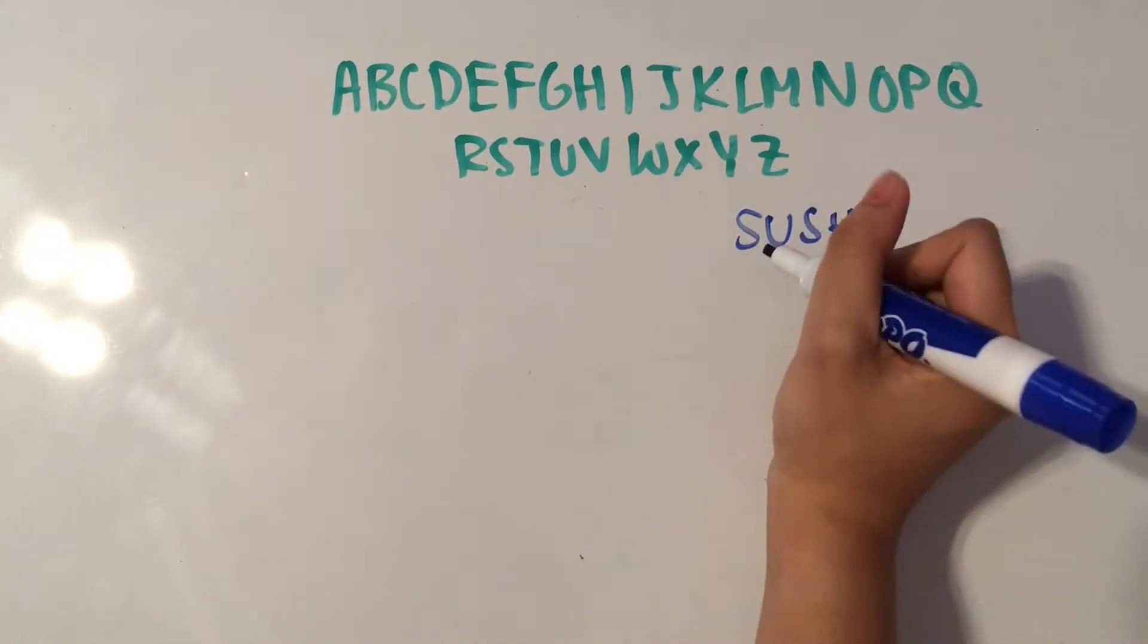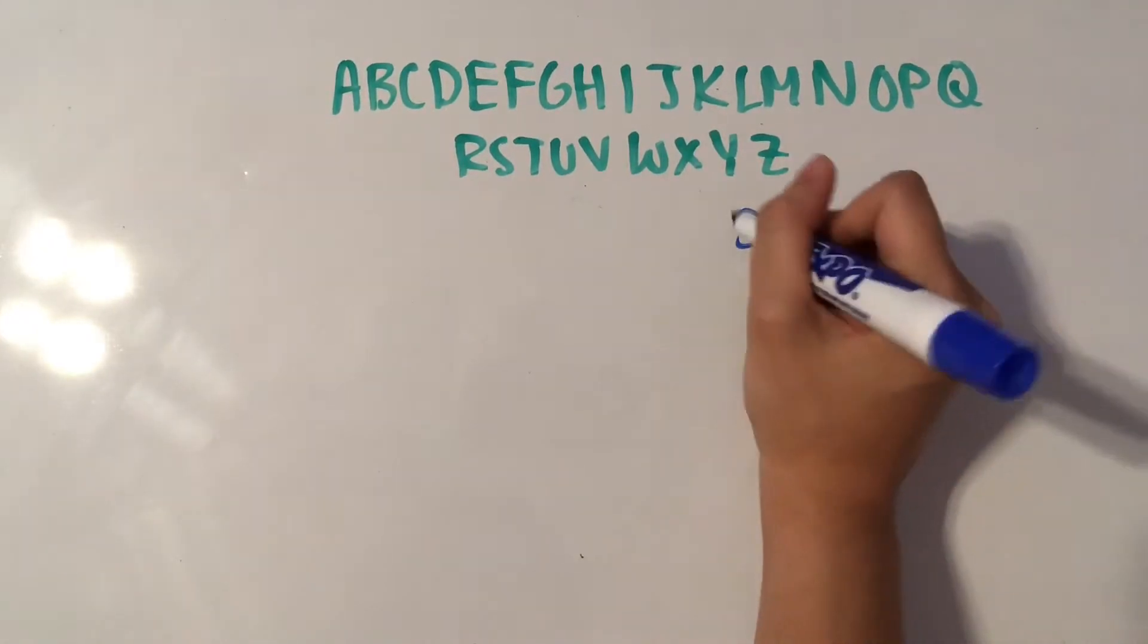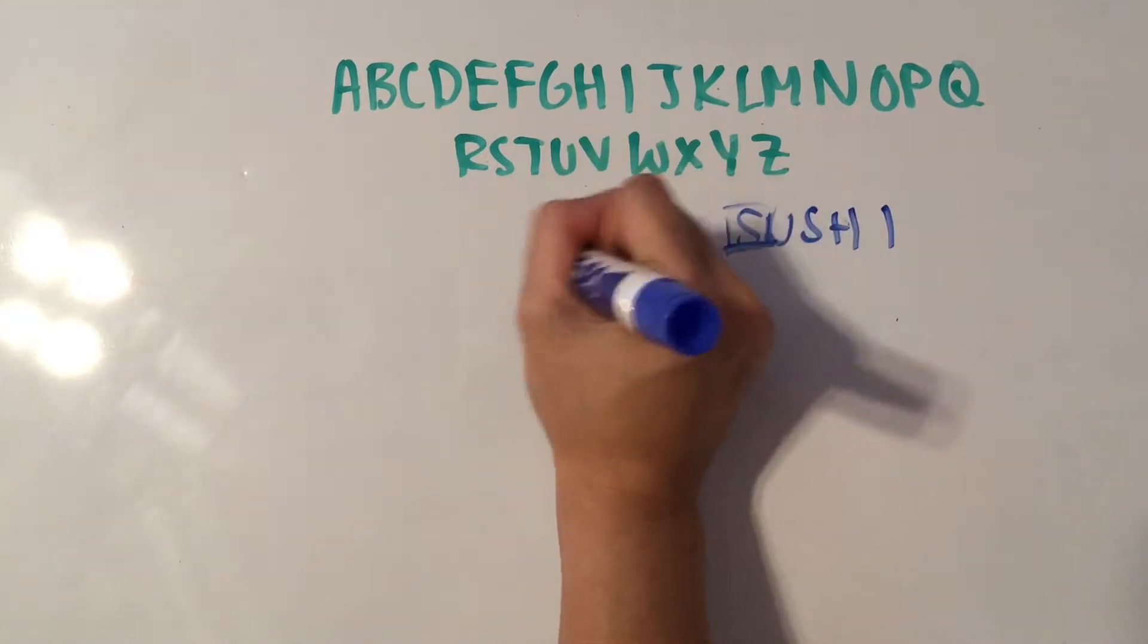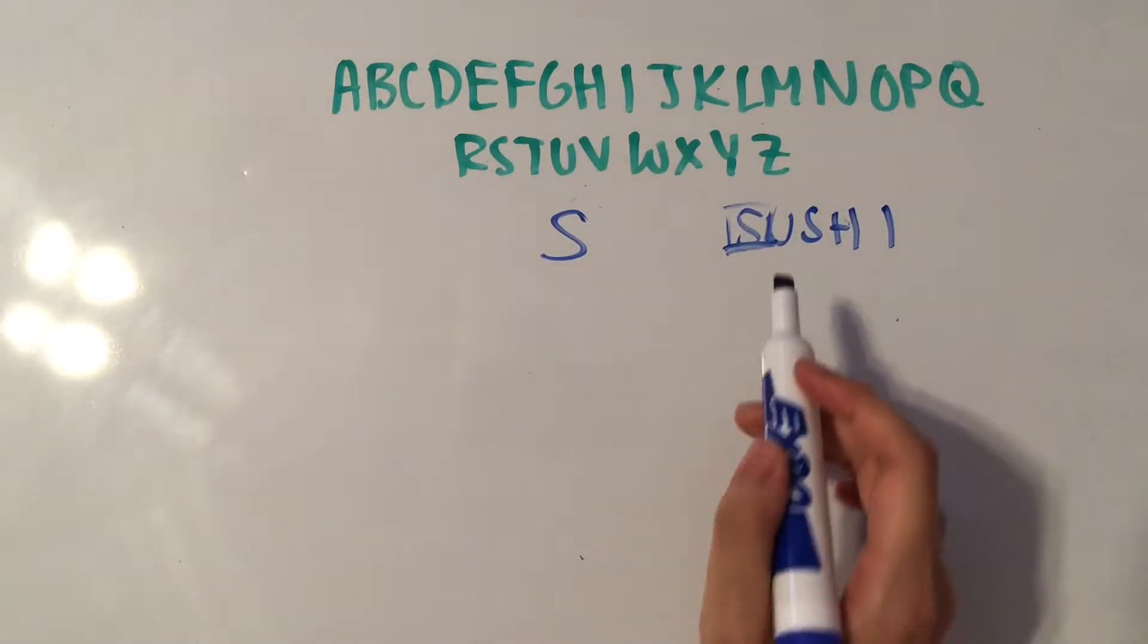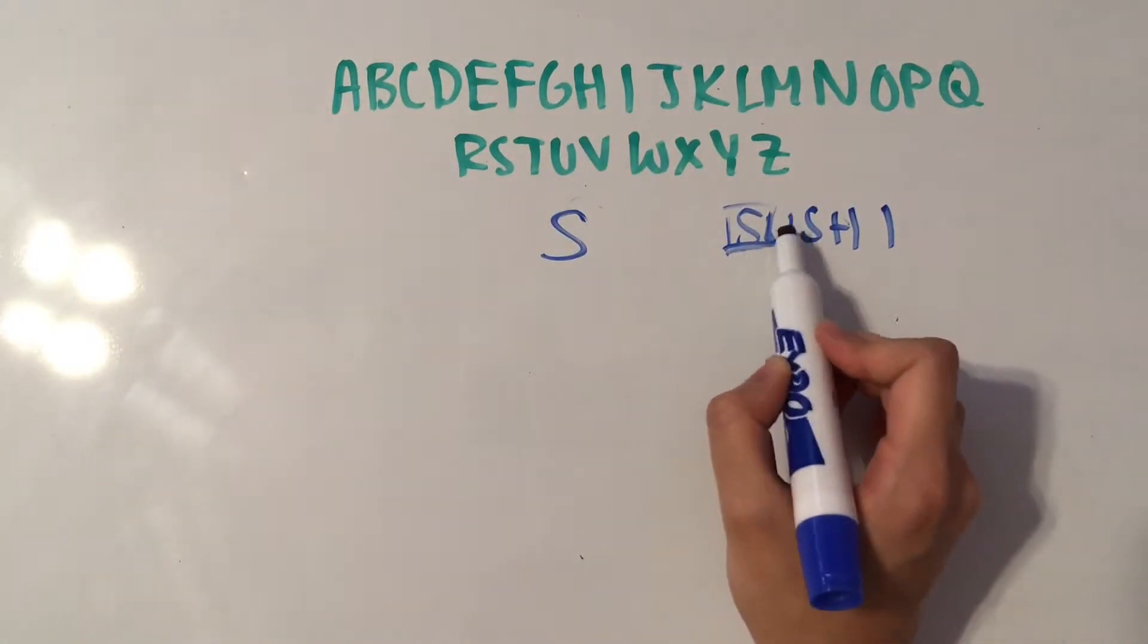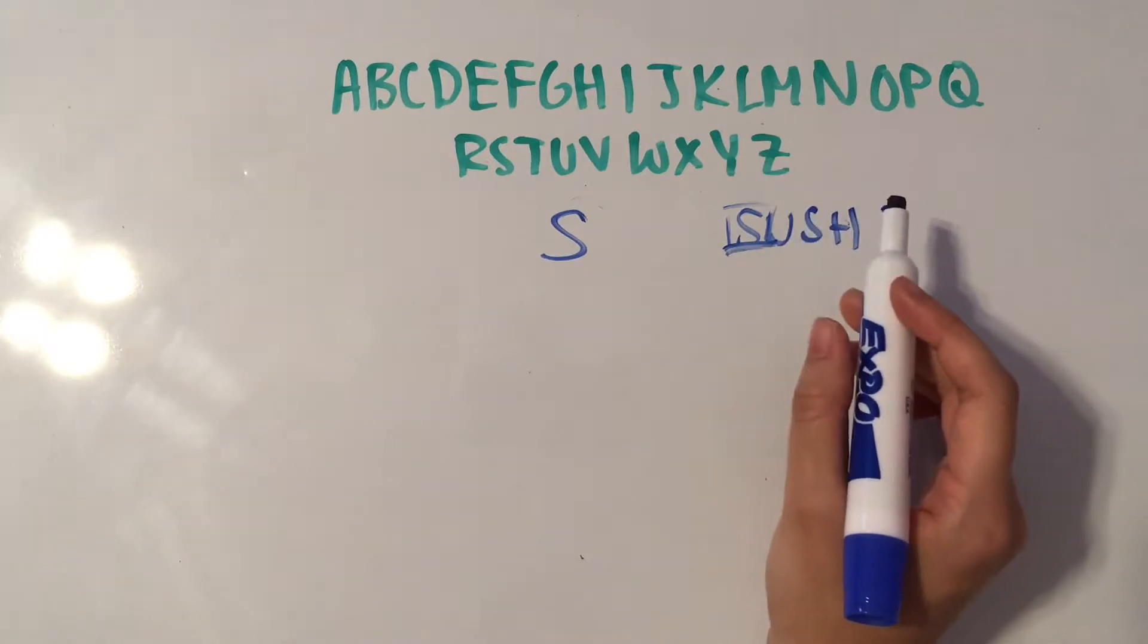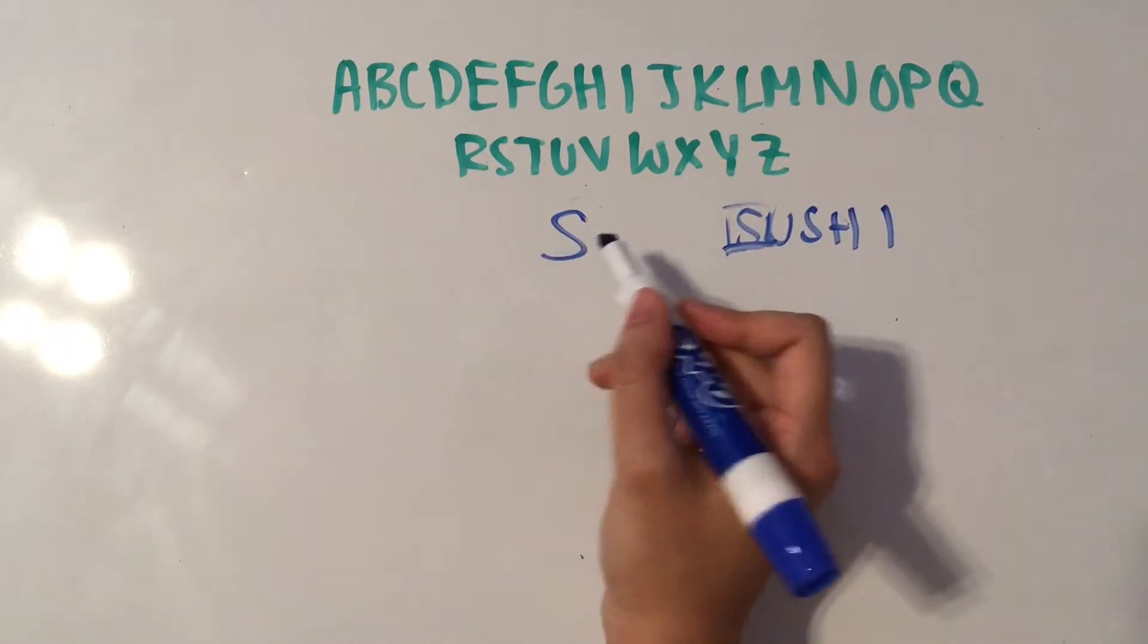So what we want to do is go through each letter of the word. So the first letter would be S, and I'll just write it in the middle here. And then you go through each letter, so the next one would be U, and see where it is in the alphabet relative to the previous letter.